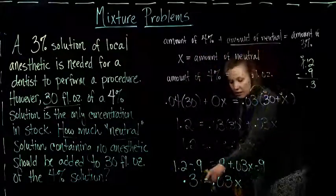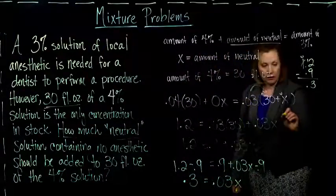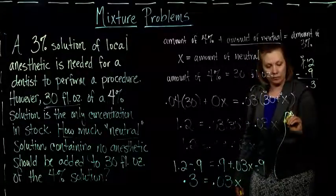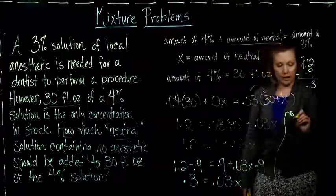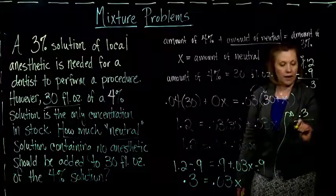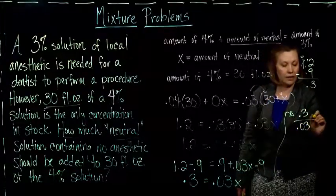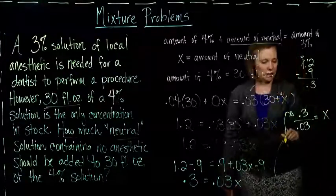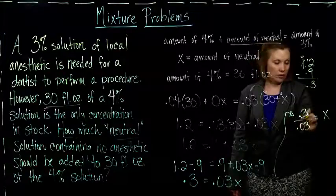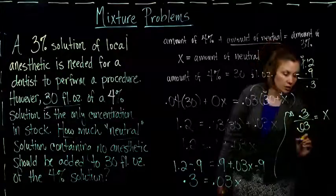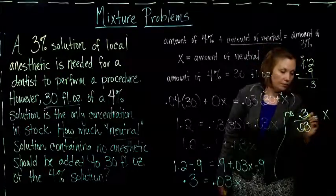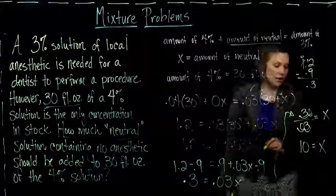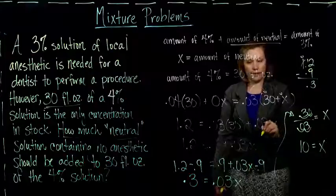And then the last thing I have to do is divide on both sides by the 0.03. So, I get 0.3 divided by 0.03 is x. So, now I just have to do this division. You should get x equals 10.